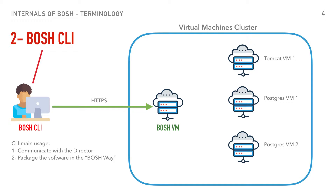Our next term will be the BOSH CLI, or the BOSH command line interface. The CLI is an executable binary that you can download from the BOSH website and execute on your local machine. The CLI serves two main purposes. The first is that it enables users to communicate with the BOSH director and send it specific commands — this communication is done over HTTPS. The second purpose is to help package the software in a format that the BOSH director understands so that it can run that packaged software. We're going to cover that a bit later.